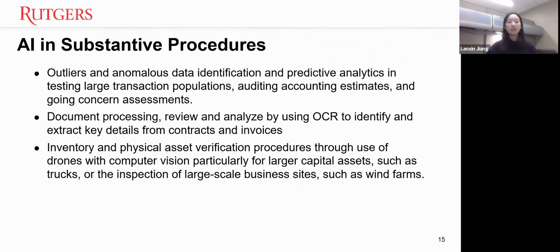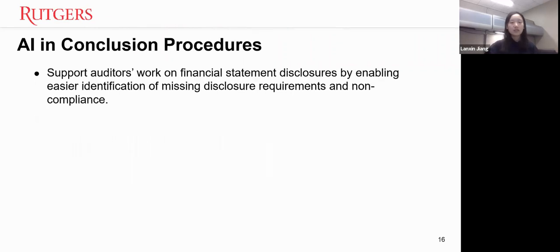For substantive procedures, we can use AI to identify outliers or anomalous data, and to predict accounting numbers or accounting estimates. In the conclusion procedure, AI can support auditors' work on financial statement disclosures by enabling easier identification of missing disclosure requirements and non-compliance.